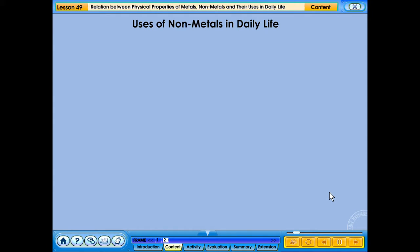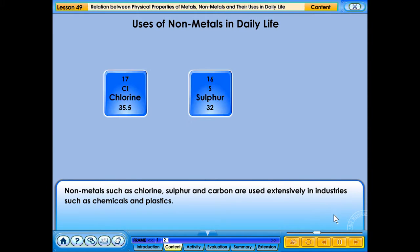Uses of non-metals in daily life. Non-metals such as chlorine, sulphur and carbon are used extensively in industries such as chemicals and plastics. Click on each of the elements to find out.